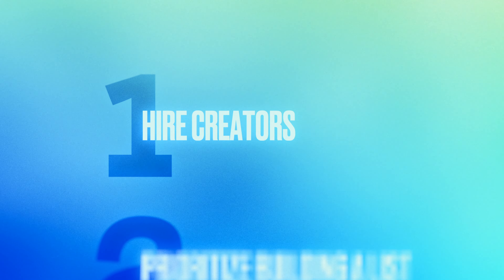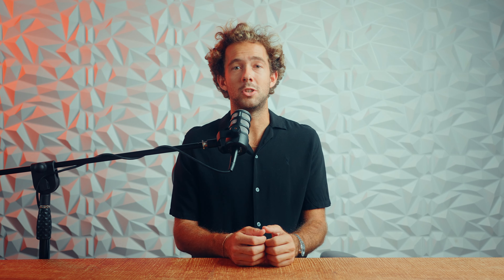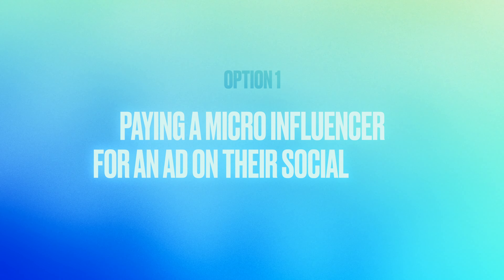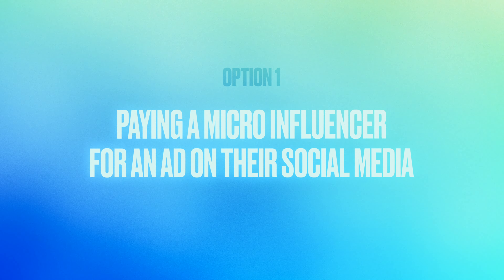After you watch this video, you'll be able to install the exact same funnel to rapidly gain paying SaaS users to your software company. The first growth hack that software companies are catching on to is hiring creators to promote their software. There are actually a few different ways you can go about this. Option number one, the most common and widely known method, is paying a micro-influencer for an ad on their social media.